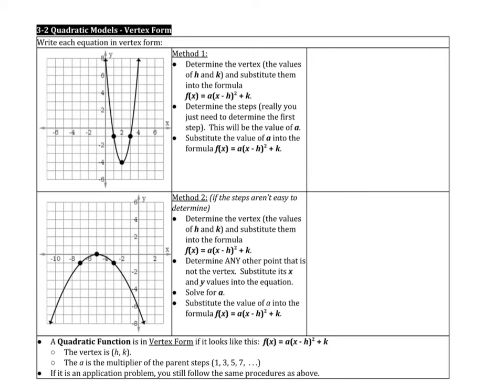Today we're going to be learning how to determine the equation of a parabola in vertex form. So the first thing you're going to do is determine the vertex, and those are the values of h and k. So here the vertex is at 2, negative 4, so the h value is 2 and the k value is negative 4.